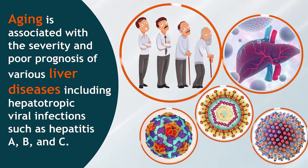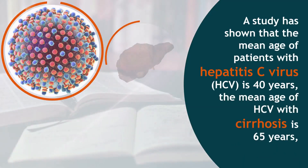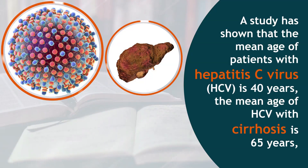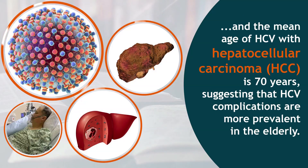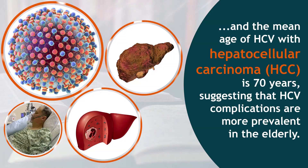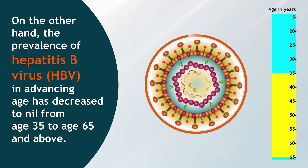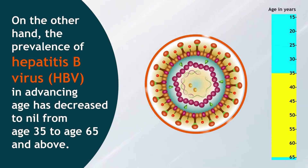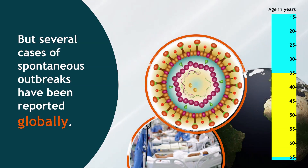Aging is associated with the severity and poor prognosis of various liver diseases, including hepatotropic viral infections such as hepatitis A, B, and C. A study has shown that the mean age of patients with hepatitis C virus (HCV) is 40 years, the mean age of HCV with cirrhosis is 65 years, and the mean age of HCV with hepatocellular carcinoma (HCC) is 70 years, suggesting that HCV complications are more prevalent in the elderly. The prevalence of hepatitis B virus (HBV) in advancing age has decreased to nil from age 35 to age 65 and above, but several cases of spontaneous outbreaks have been reported globally.